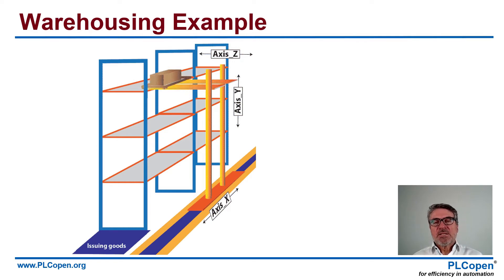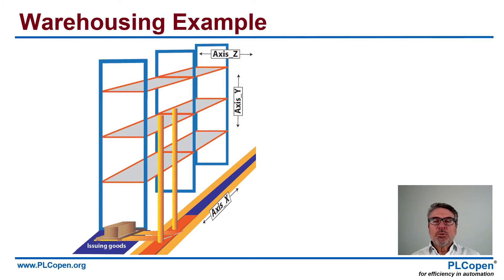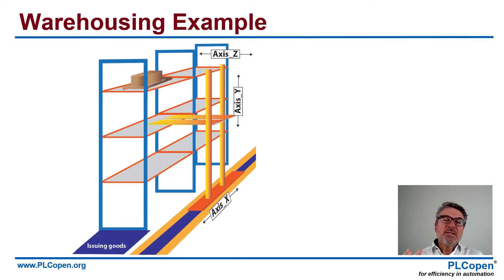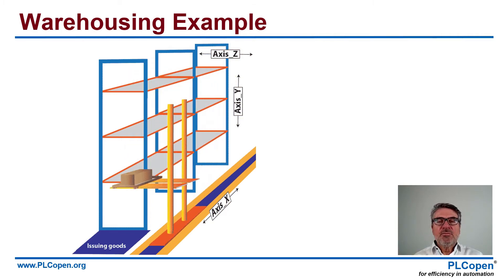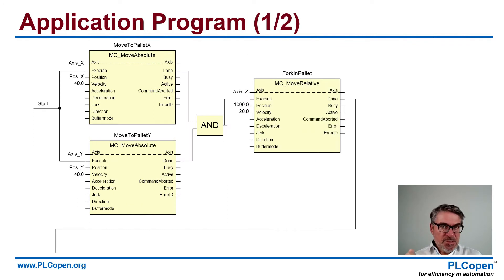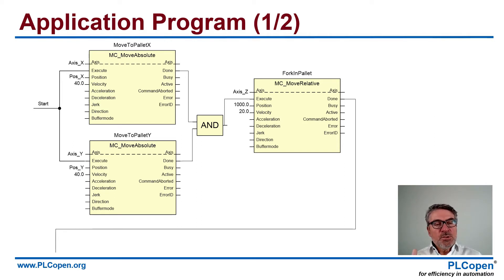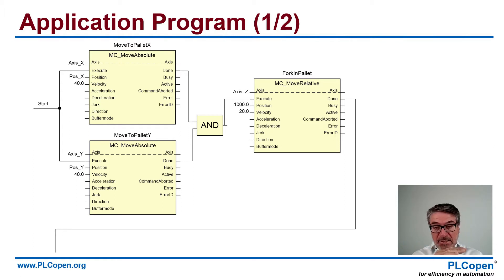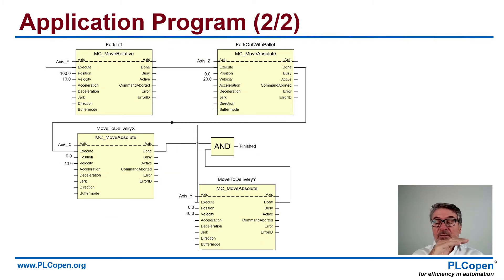A second example is a warehousing example, where we want to take out a pallet at a certain position. You see the x-axis, y-axis, and z-axis, and the goal is to retrieve the pallet to take out the products. The application program consists of two parts: first, we go to the point where the pallet is — assuming we come from the origin, the zero position — with a certain position and velocity profile using two Move Absolutes. When they have reached their position and are both done, I can move the fork into the pallet. Then in the second part, I lift the fork, take it out again, and get back to the delivery point — again two Move Absolutes. The fork lift is a Move Relative, and the Move Absolute is used to take it out. Simple.